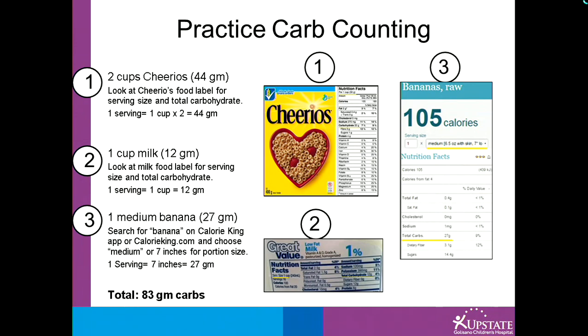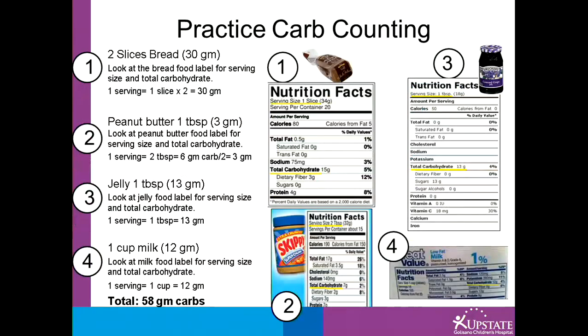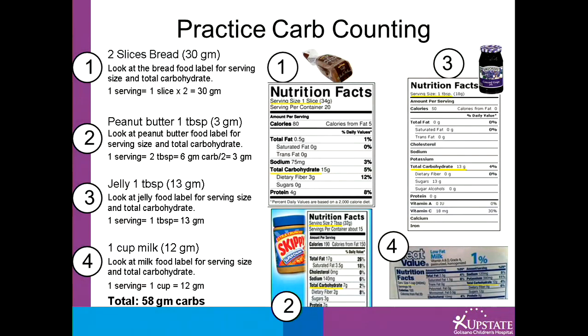To figure the amount of carbohydrate in a peanut butter and jelly sandwich with milk, you would look up each item individually. A slice of bread is 15 grams of carb, so two slices would equal 30 grams of carb. Two tablespoons of peanut butter is 6 grams of carbohydrate, so if you are only having one tablespoon, you would take half of that, which is 3 grams. A tablespoon of jelly is 13 grams of carbohydrate. A cup of milk is 12 grams of carbohydrate. Adding them all together, you have 58 grams of total carbohydrate in this meal.